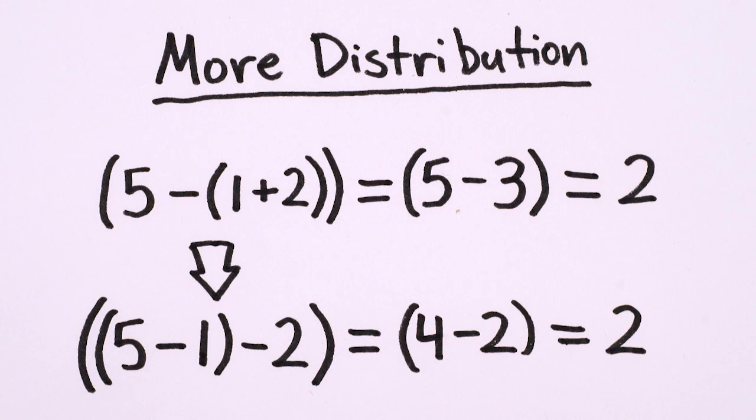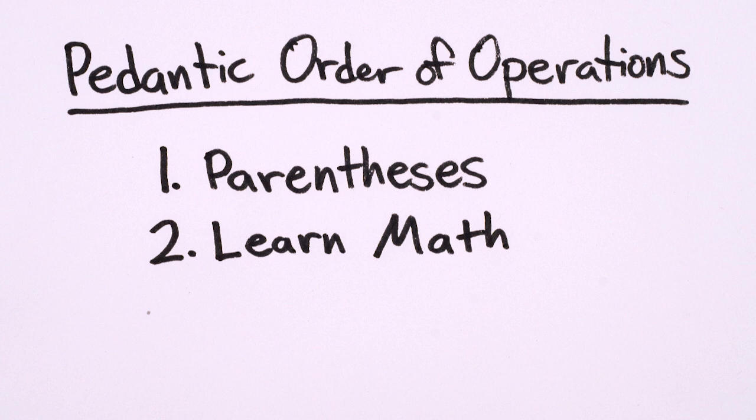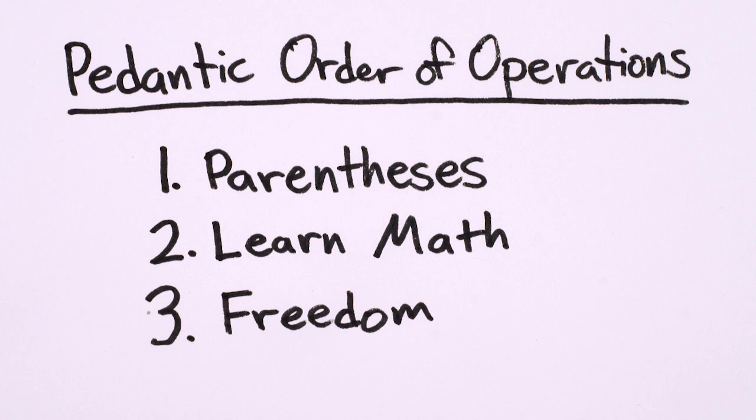So the true order of operations is this. Use parentheses and learn what exponentiation, multiplication, addition, and the rest are really doing. Then you can proceed however you want.